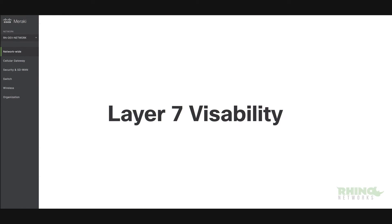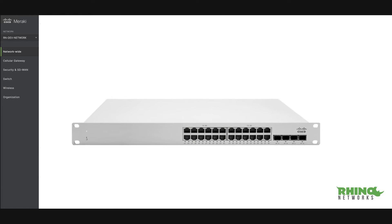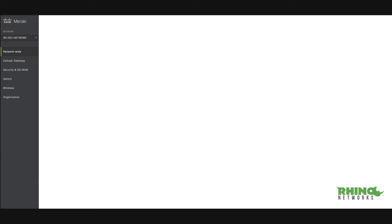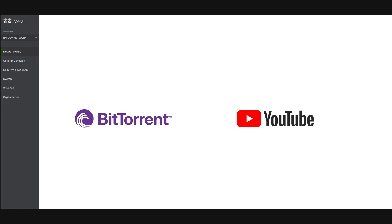Layer 7 visibility, previously available only through expensive overlay appliances, is included in Cisco Meraki switches at no additional cost. Hundreds of applications are automatically identified and reported, anything from BitTorrent to YouTube.